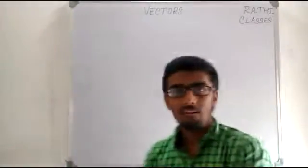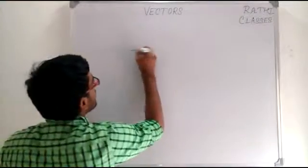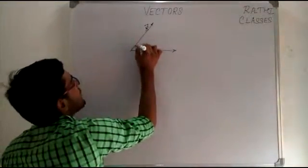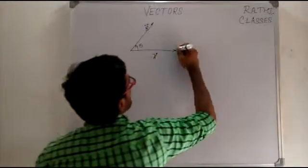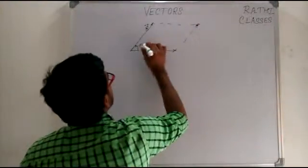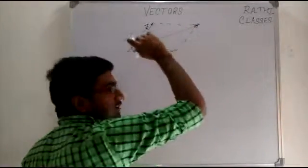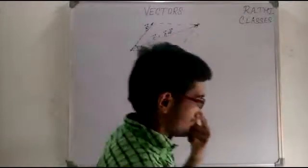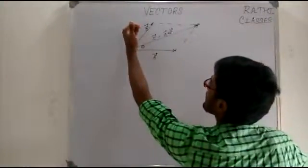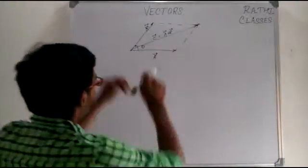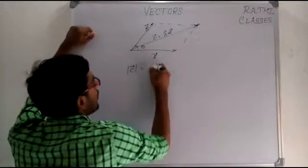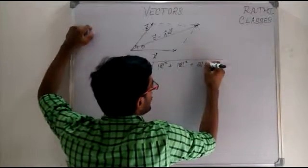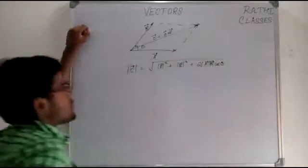Let's continue with our vector discussion. We discussed that if this is a vector A and there's another vector B, and these two vectors are inclined to each other at an angle theta, then if we complete the parallelogram, we have a vector C represented by the diagonal, where vector C equals vector A plus vector B. The magnitude of vector C is equal to root over of mod A squared plus mod B squared plus 2 mod A mod B cos theta.